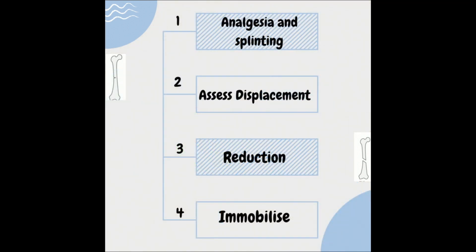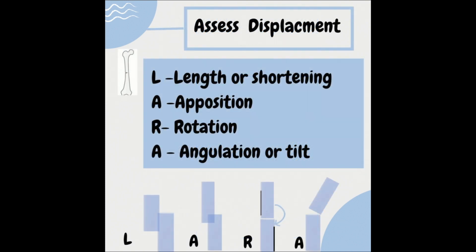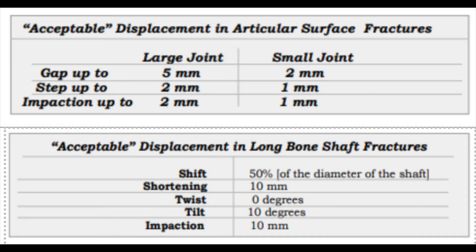The next step is to assess the displacement so we can decide on definitive management. This is done using imaging and the abbreviation LARA, to denote length, alignment, rotation, and angulation. A fracture will be deemed acceptable or unacceptable depending on the values of each modality as seen in the table below. An acceptable displacement will not require reduction, while an unacceptable displacement will require reduction.